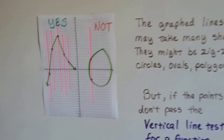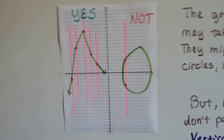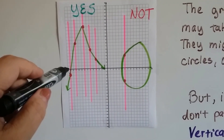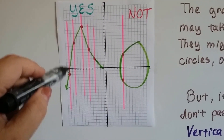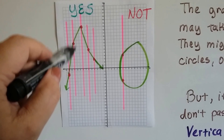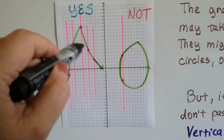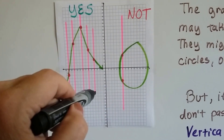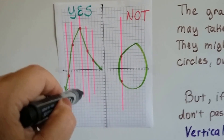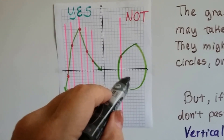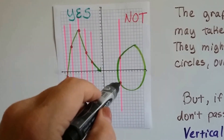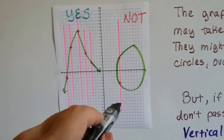Let's look at this one. We drew a lot of vertical lines to see if this was a function, and each one went through one time, so yes, that would make a function. But this one — one line went through it twice, so it's not a function.